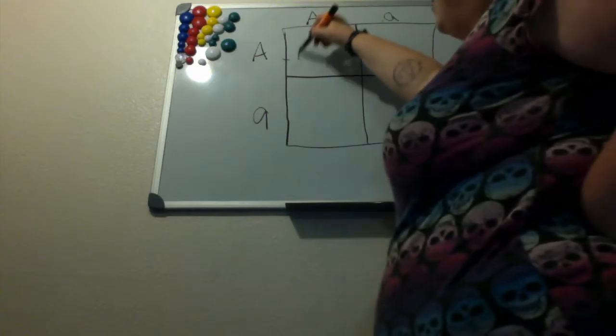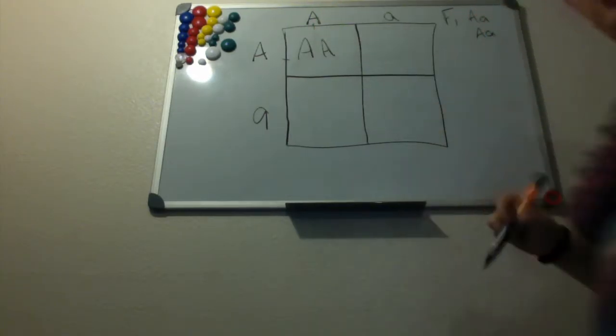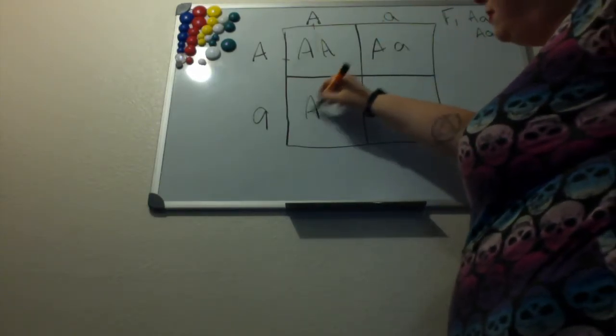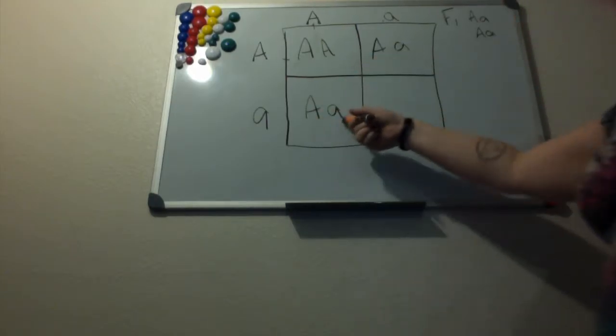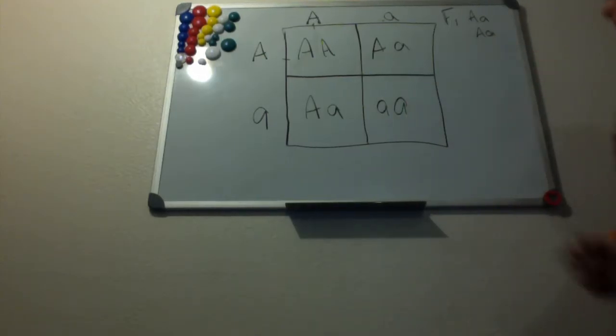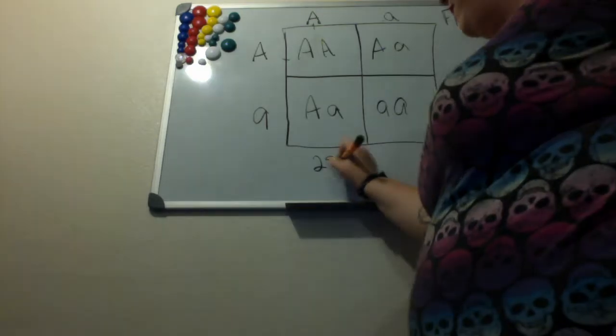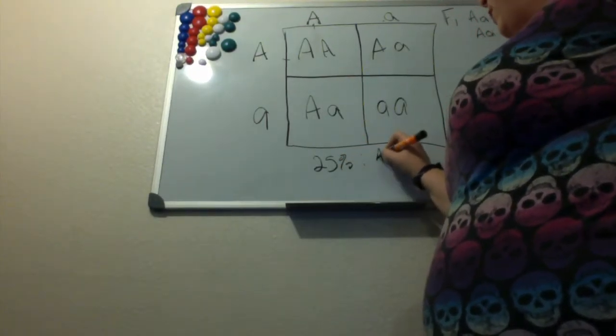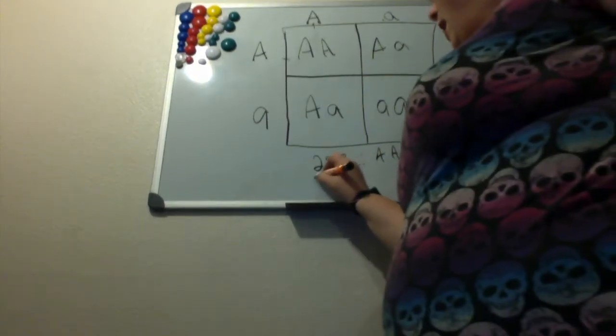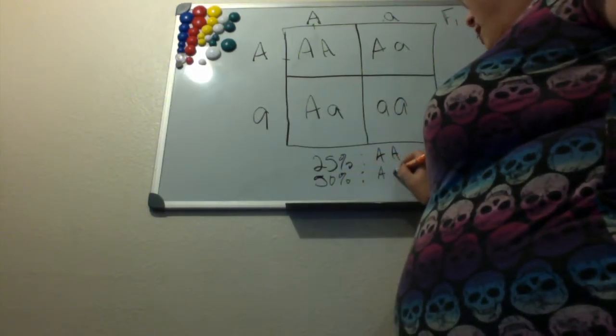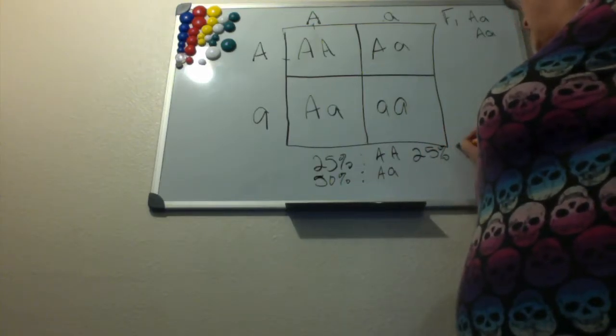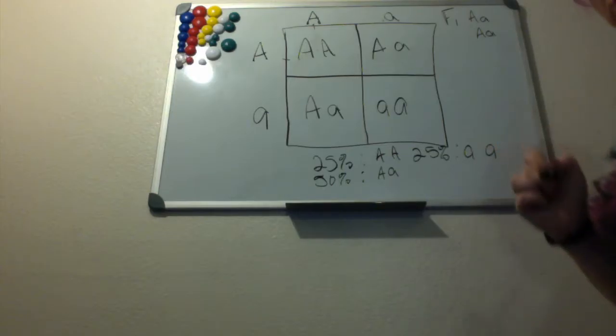We've got one offspring that will get two dominant alleles, we have two offspring that will get a dominant and a recessive allele, and then we'll have one offspring that will get two recessive alleles. So in this case we have a 25% chance that our offspring will have two dominant alleles, a 50% chance that our offspring will have one dominant and one recessive allele, and then a 25% chance that our last offspring will have two recessive alleles.